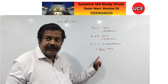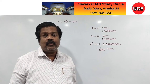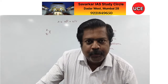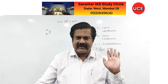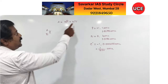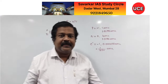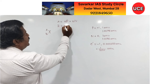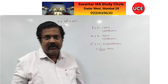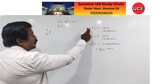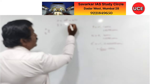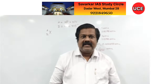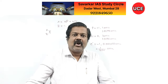The electron, the first subatomic particle discovered by J.J. Thomson, has a charge of −1, exactly equal in magnitude to the proton's charge. Its mass varies with speed, but for general practice is taken as 0.00055 amu, or equivalently 1/1850 amu — meaning 1850 electrons together equal a mass of 1 amu. Because electron mass is negligible, the mass number A accounts only for protons and neutrons, while atomic number Z equals the number of protons.